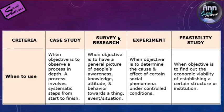Survey research is the popular method used in the social sciences. It is used when the objective is to get a general picture of people's awareness, knowledge, attitude, and behavior towards a thing, event, or situation. This usually involves a population, and since we can't study the whole population, if it is well defined, we engage a fraction of that population, which we call a sample — which will be discussed in detail in the next modules.